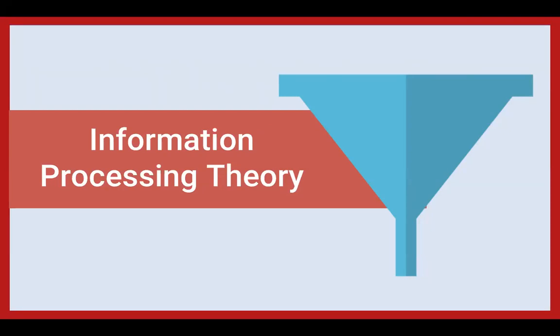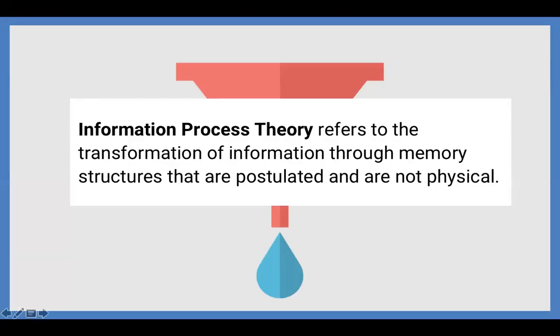Information processing theory refers to the transformation of information through memory structures that are postulated and are not physical. One thing that's really important to remember: although information processing theory affects and influences our instructional design, everything we're going to be talking about is a theory. There's been a lot of experimentation suggesting this seems pretty accurate. However, there are no physical corollaries to the structures we're going to talk about — no one has looked in the brain and said, 'There's long-term memory.' It just means there are no physical structures to correspond to the theory.